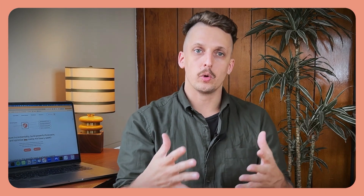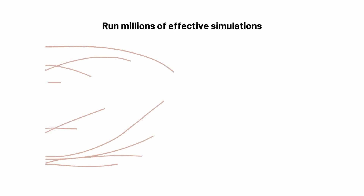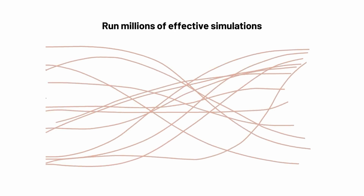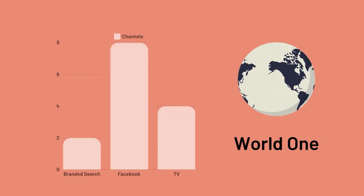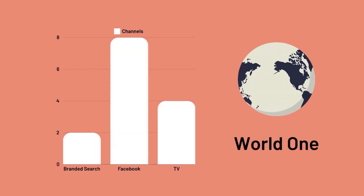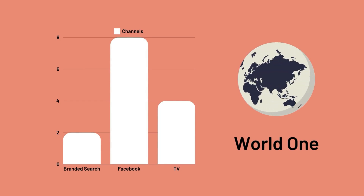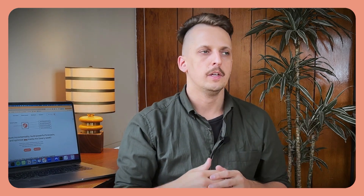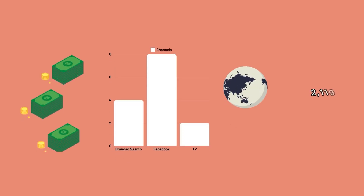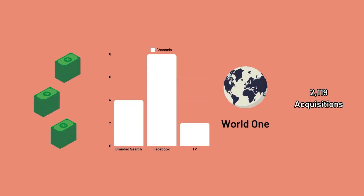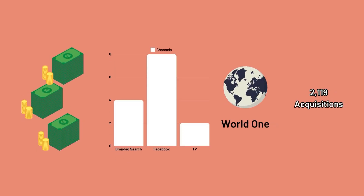All of these factors are baked into this simulated world, and then what Recast is doing when it runs is it's taking your data and running millions and millions — hundreds of millions — of different simulations, different versions of this simulated world. So you might have simulated world one where Facebook performance is really high and TV performance is really low, and Facebook has a really short time shift and TV has a long time shift, and the diminishing returns curve looks a certain way. Then you ask: if world one was true, what would the revenue or conversions look like? You take the marketing spend data, multiply it through by all of those parameters, and get a curve for revenue or conversions.